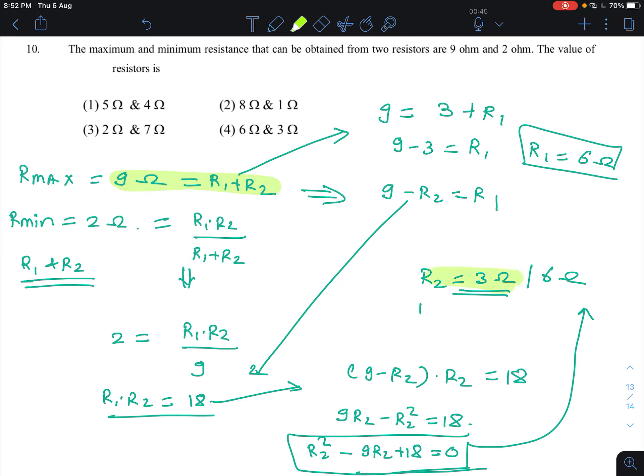You are getting two combinations of resistances, that is 3 ohm and 6 ohm. You either put 6 ohm or you get 3 ohm.